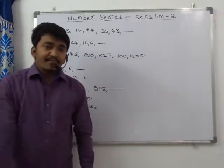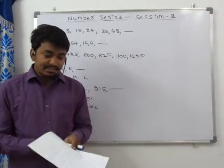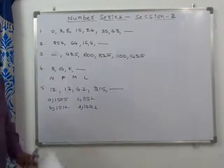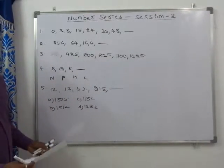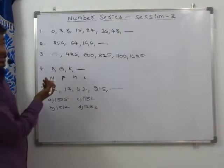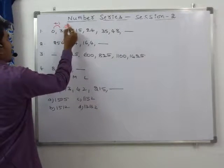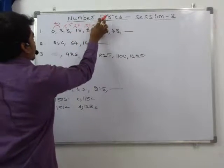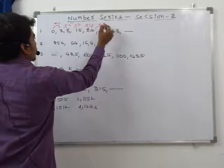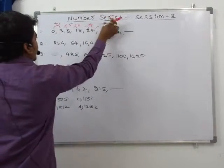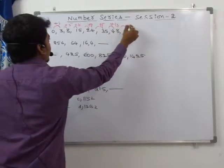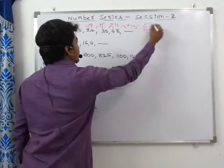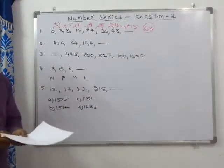Let us have a quick recap of the number series questions. Question 1 is easy — work out by differences: differences are 3, 5, 7, 9, 11, 13; next difference is 15. So 48 + 15 = 63. The differences are odd numbers.